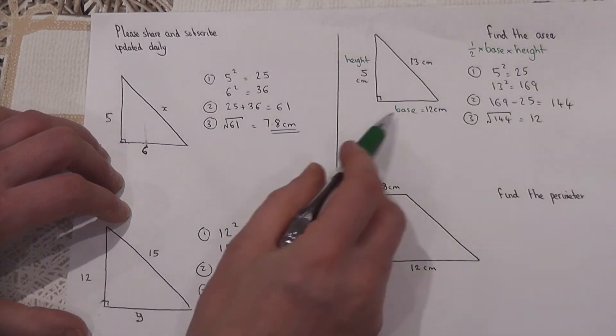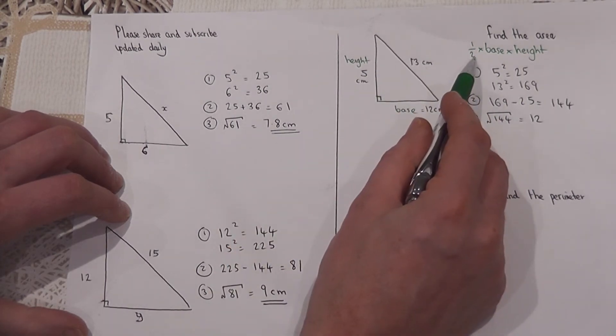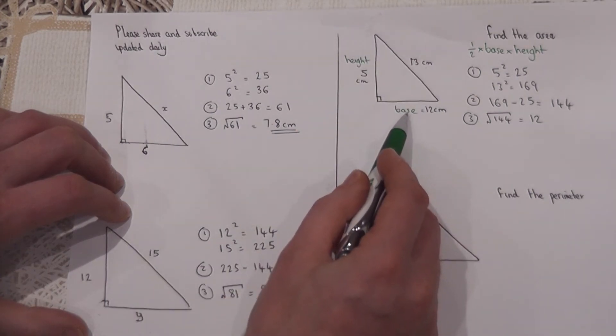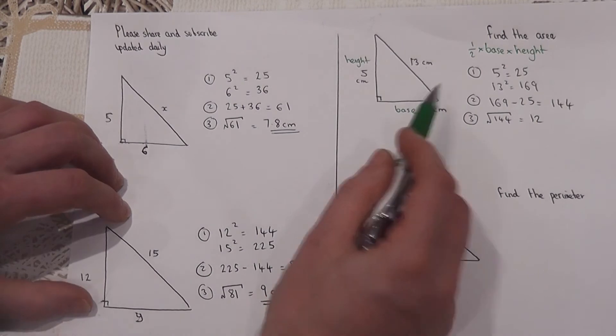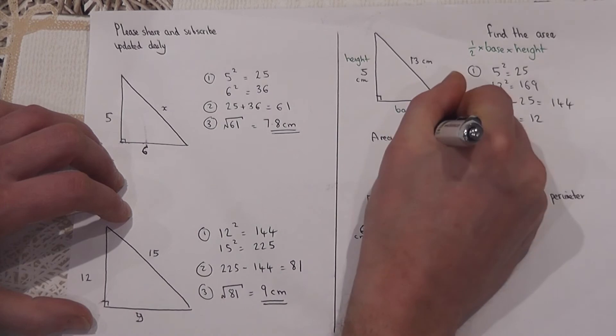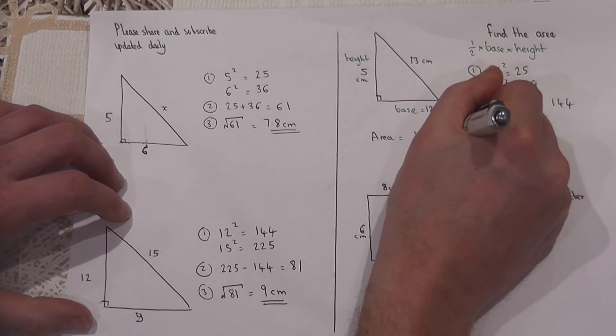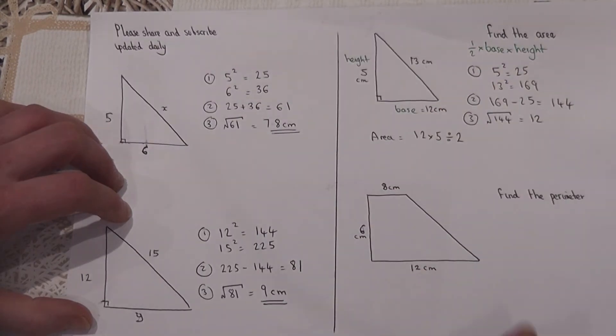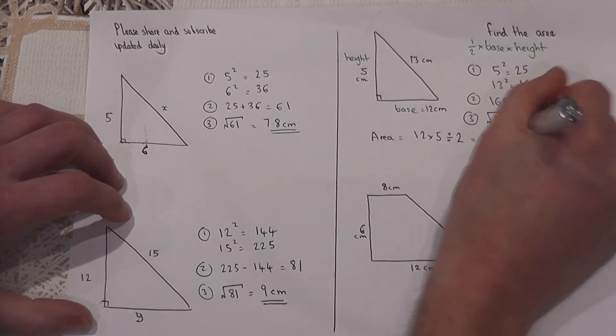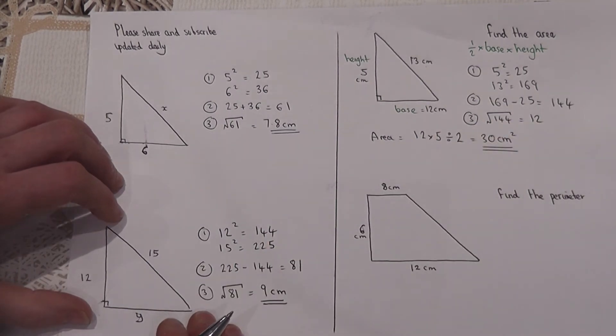Now the area is the base times the height divided by 2. I've used the 13 to find the base, but now I know the base, the 13 becomes irrelevant. So the area, I do the base times by the height, which is 60, divided by 2, which is 30. So the area is 30 cm squared. We make sure we include the units for area in the answer.